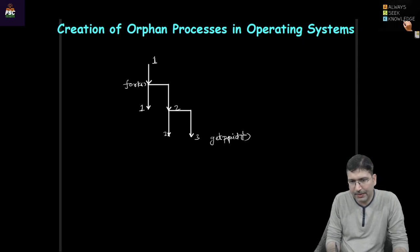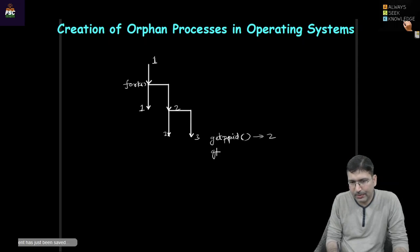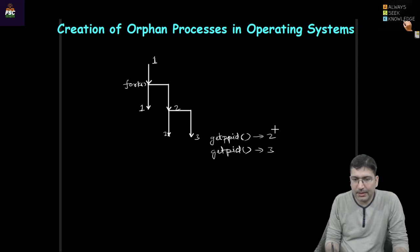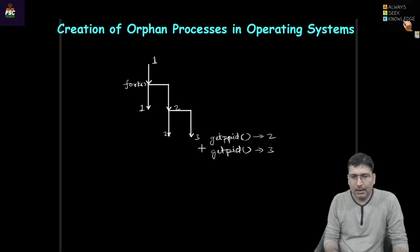If we print the parent process ID of process three it will be two, and the process ID — using getpid — of this process is three. So the meaning is: for process three the parent is two. Similarly, with the help of these two system calls, if we print the parent process ID of process two it will be one, and so on.